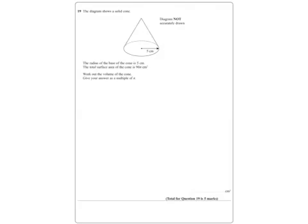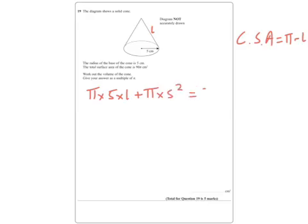Now, you'll find the formula for the curved surface area at the front, which is pi r L. Now, L is the slant height. So therefore, what we know, because the total surface area is 90, we know that pi times 5 times whatever L is, plus the base, don't forget the base, which is a circle, equals 90 pi.